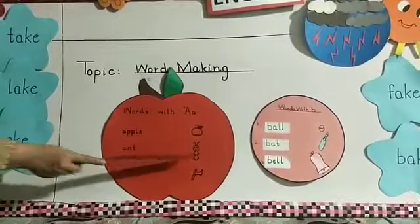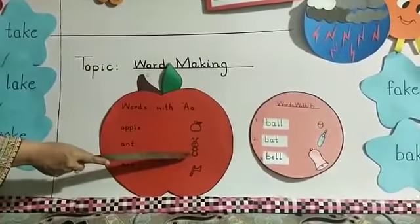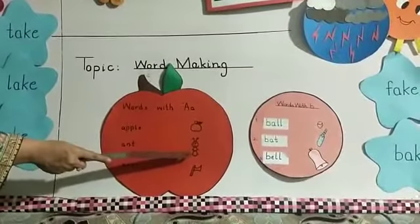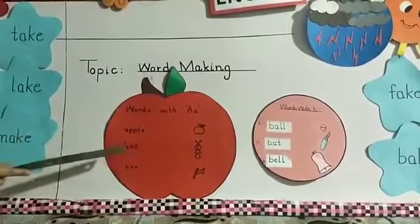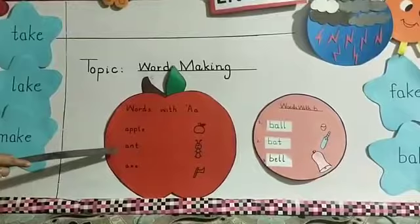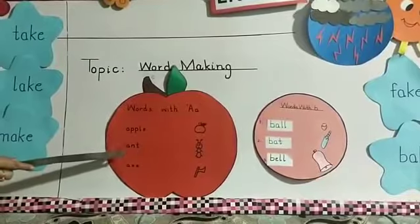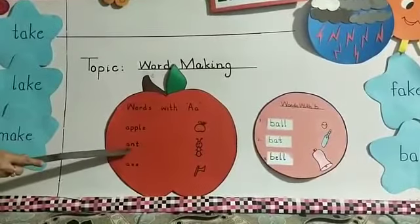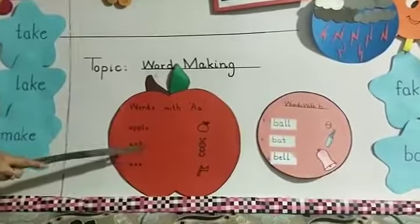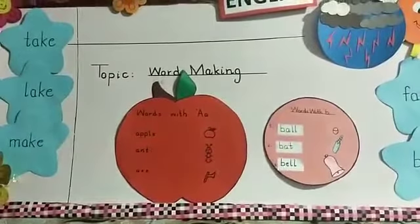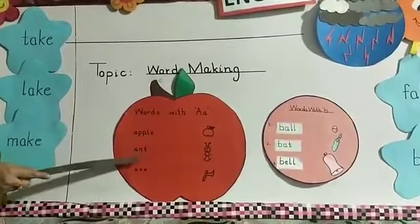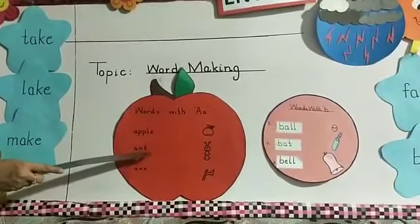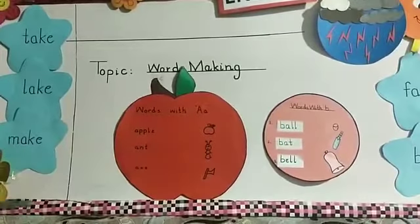Come to the next picture. Look here. What is this? This is an ant. And what is the spelling of ant? A-N-T, Ant.